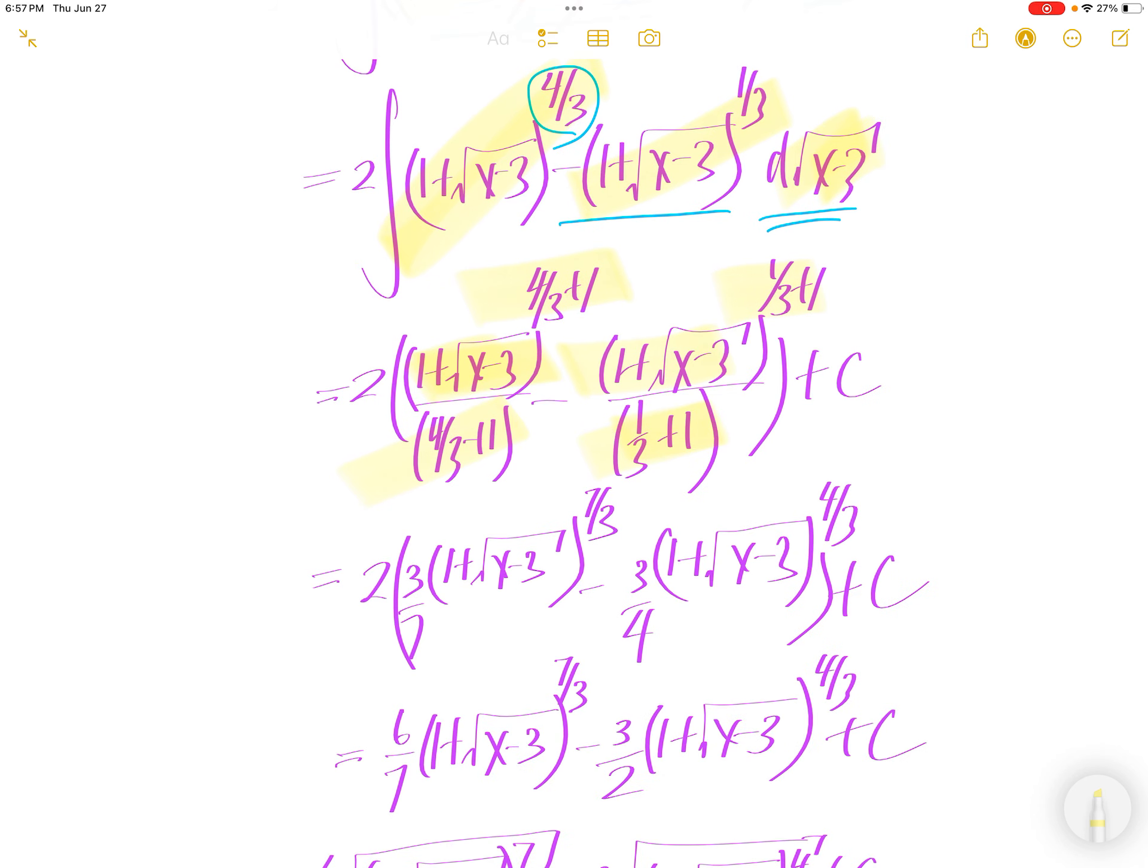4 over 3 plus 1 is 4 over 3 plus 3 over 3, 7 over 3 upstairs, 7 over 3 downstairs. Flip it up, you get 3 over 7.